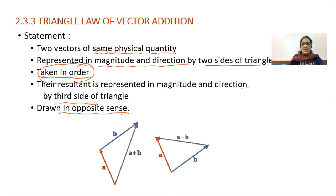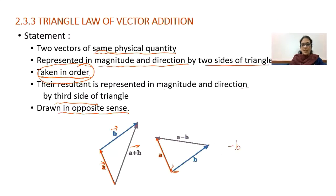We can show this in a diagram. If vector A bar and vector B bar are taken in order, then the resultant is A bar plus B bar, drawn in opposite sense from the starting point of the first vector to the end point of the last vector. In the second diagram, if A and B are not taken in order — if vector B is reversed — then that is written as minus B, making the resultant A minus B.